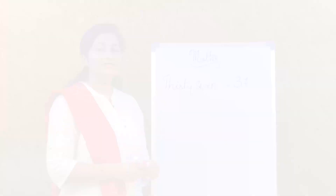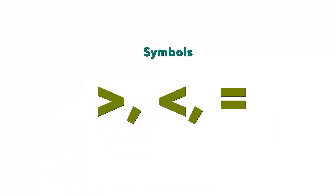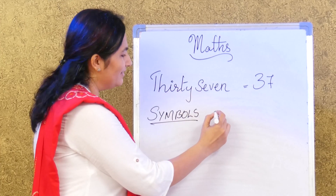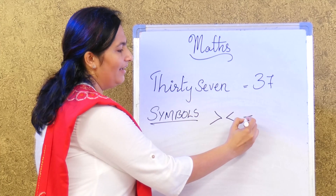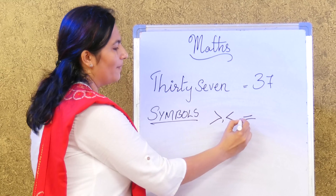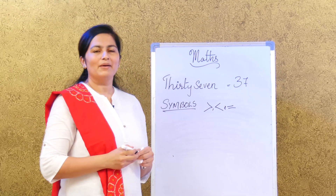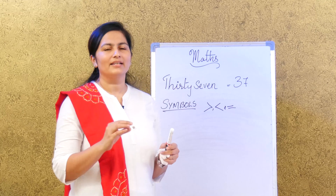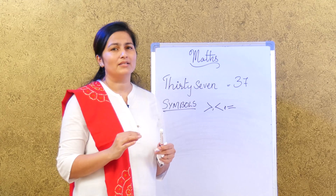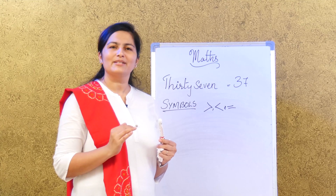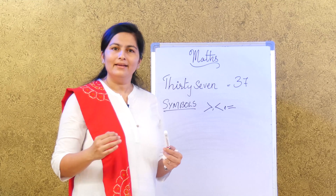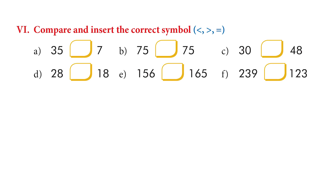Moving on to the symbols: greater than, lesser than, and equal to. Not everything is the same — all numbers have something bigger or smaller than them, and some may be equal. Let's look at exercise 6: compare and insert the correct symbol. Number 1: 35 and 7 — which is larger? 35 is larger than 7.